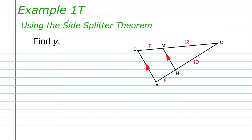In example 1T, we're going to be using the side splitter theorem to find Y. Here we have a triangle, and it should be obvious that segment NM is parallel to segment AB. Therefore, we can apply the side splitter theorem. The proportion we set up relates the segment lengths: BM over MC is equal to AN over NC.